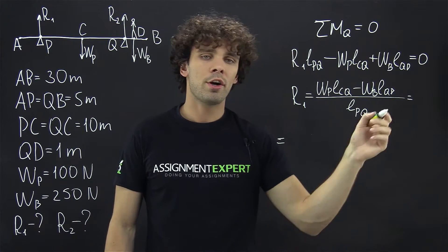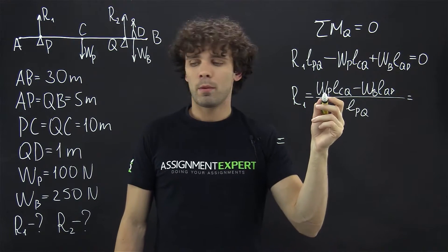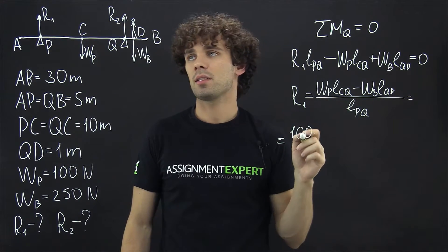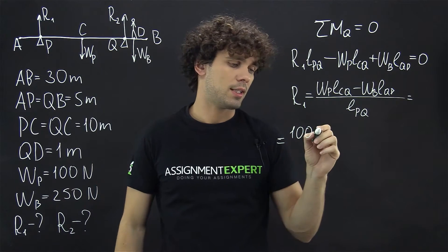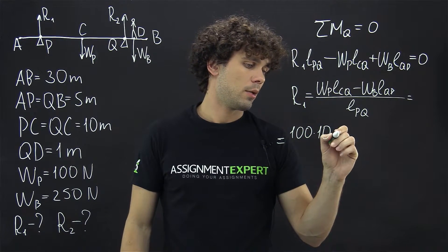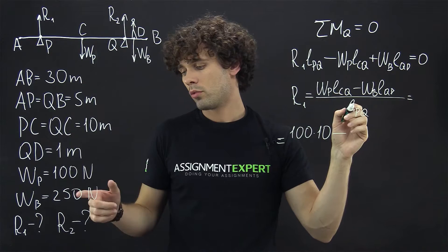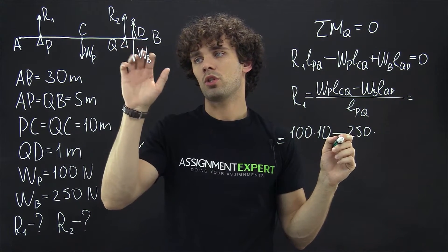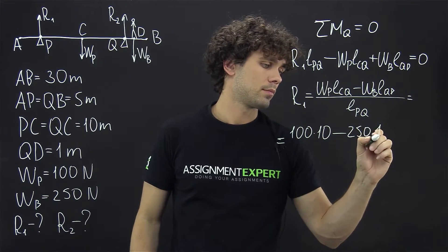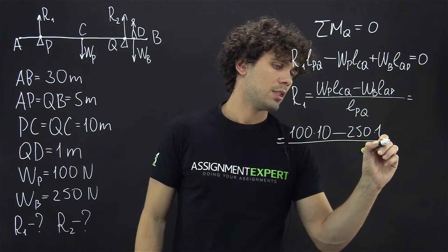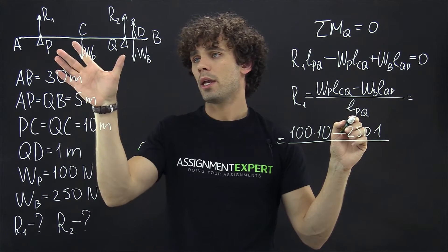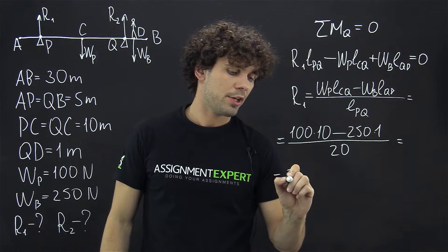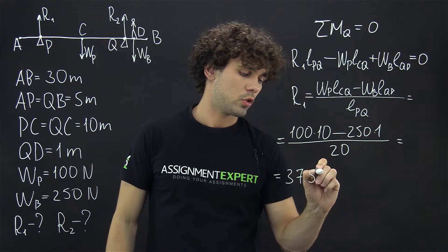Now what are these values? We have the weight of the plank, which is 100, and we multiply it by LCQ. CQ is 10 meters. Then we have minus the weight of the buoy, 250 newtons, times the distance from point Q, which is 1 meter. And all of this is divided by LPQ, and PQ is 20. And we get 37.5 newtons.